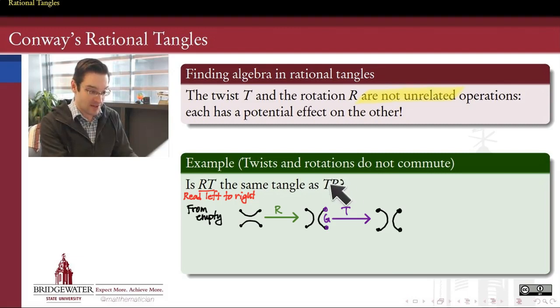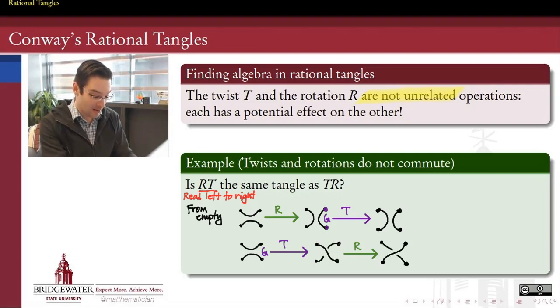So what's the difference if I did T first and then R instead? So starting from an empty tangle, if I first did T and then did R, that first twist is going to introduce a crossing. And then when I rotate my diagram, that crossing is going to be preserved. So even starting from an empty tangle, the result of doing RT is different from the result of doing T followed by R.